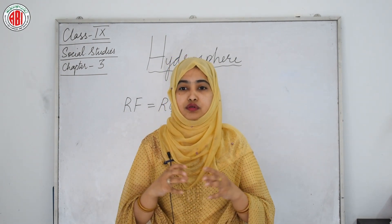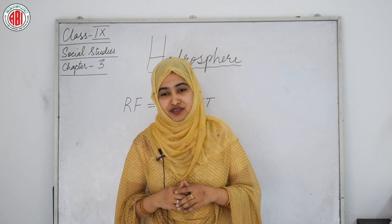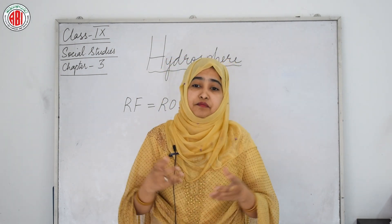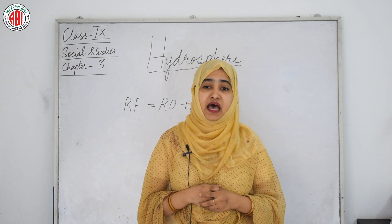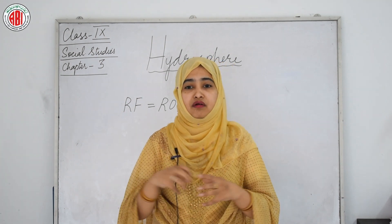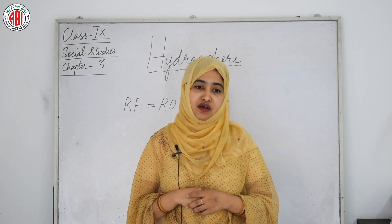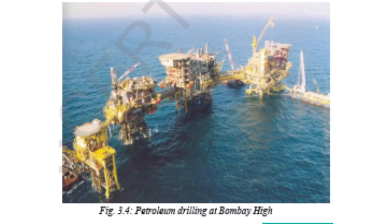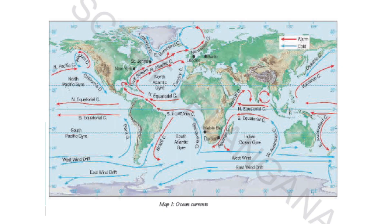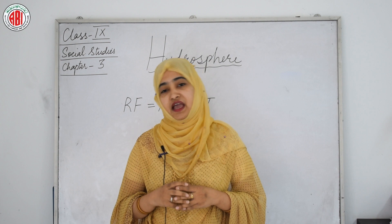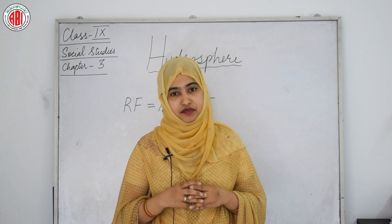Today, oceans have fallen victim to exploitation. Many large fish like whales have been disappearing, and the oceans have become dumping grounds for plastic and other toxic waste. By this observation and explanation of the hydrosphere, we have completed our third chapter. Thank you.